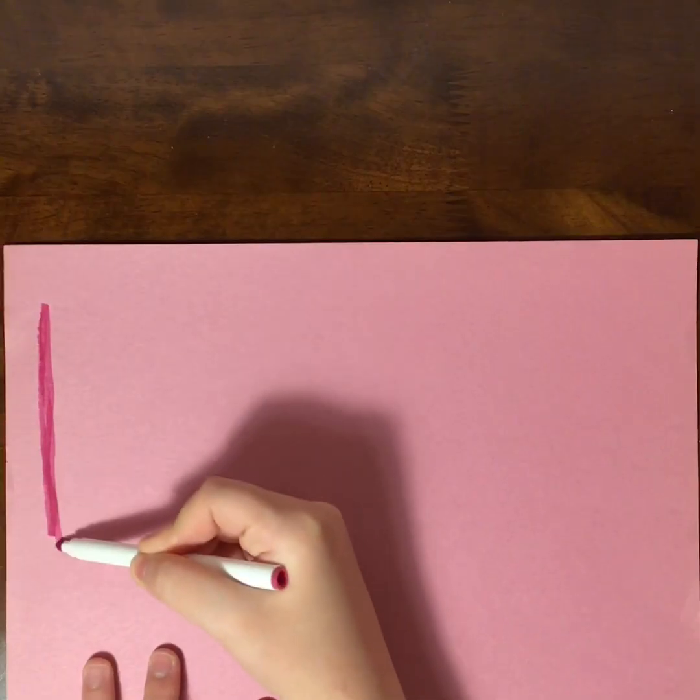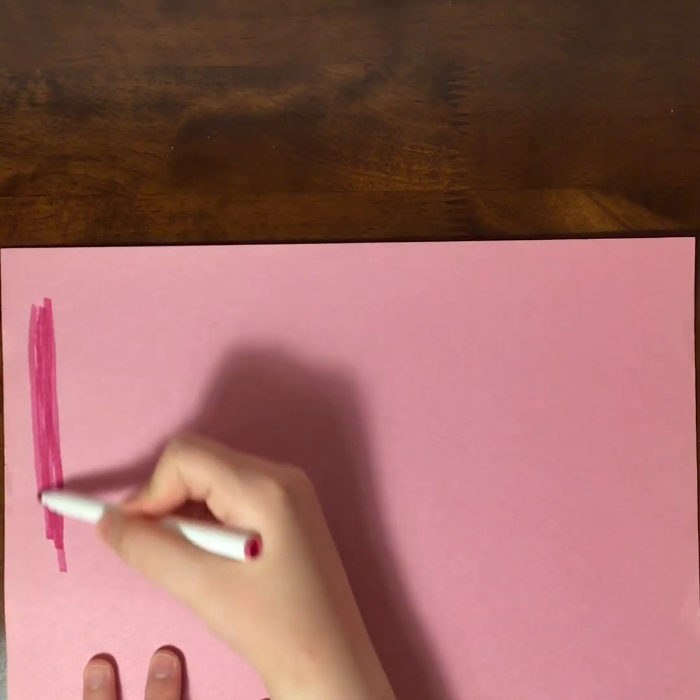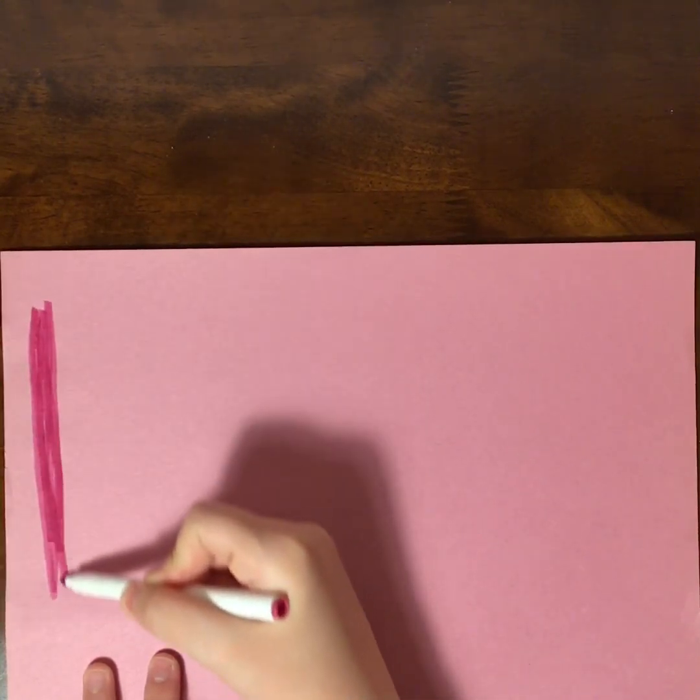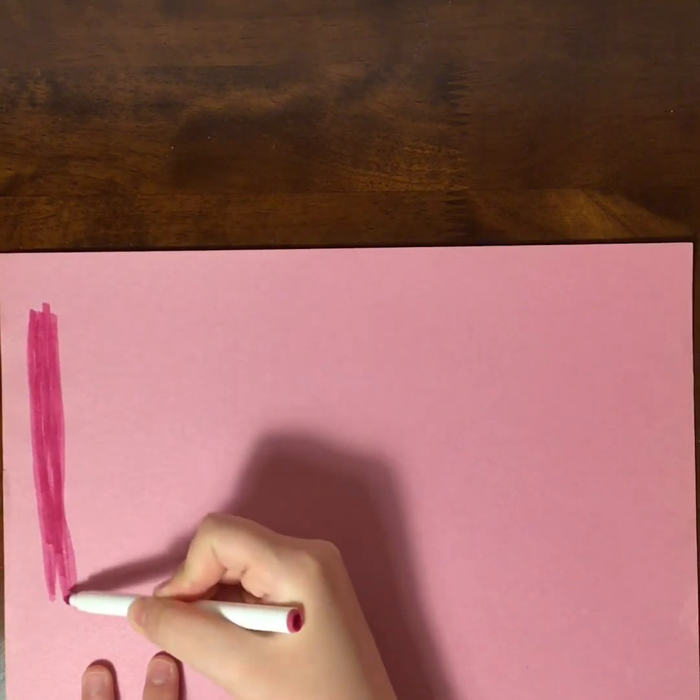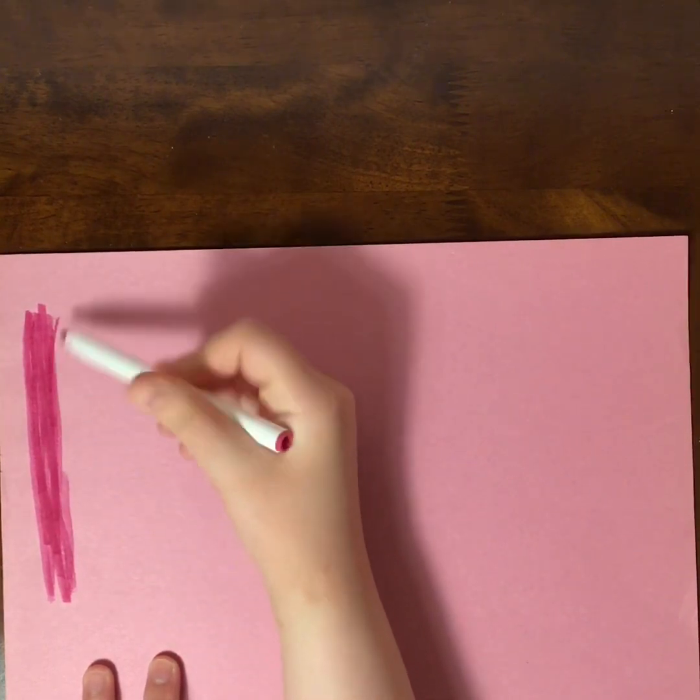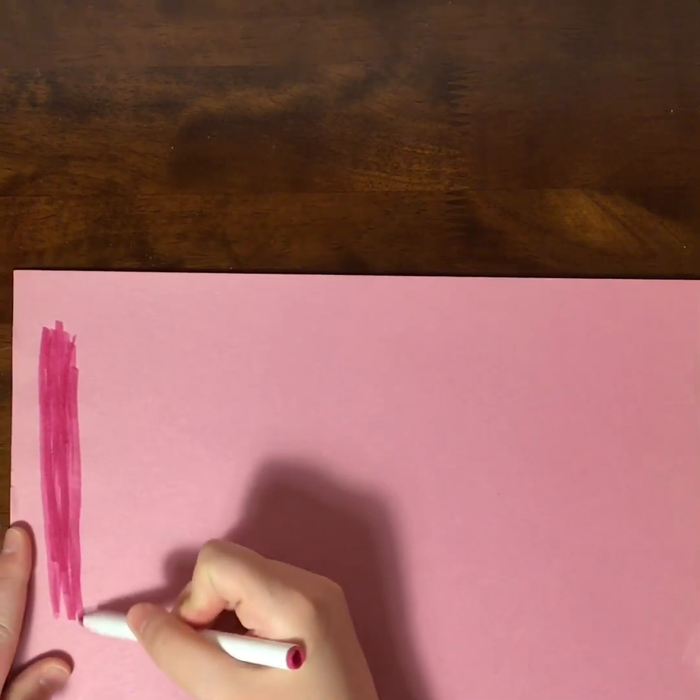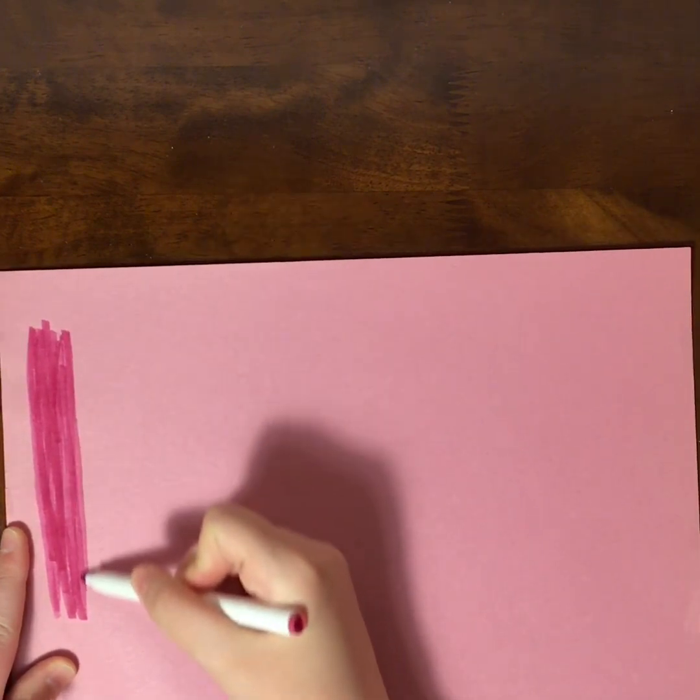So the next thing you're going to want to do is prepare to make the tentacles. I really didn't like the fact that I didn't have enough dark pink paper, or I didn't really have any dark enough pink paper to make the tentacles.